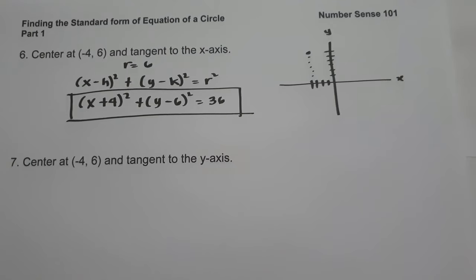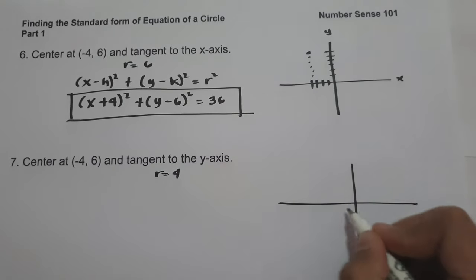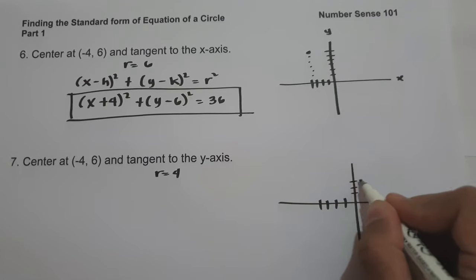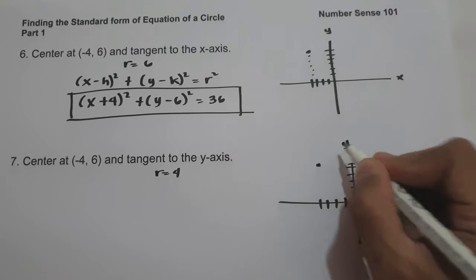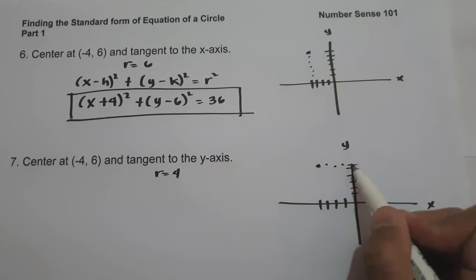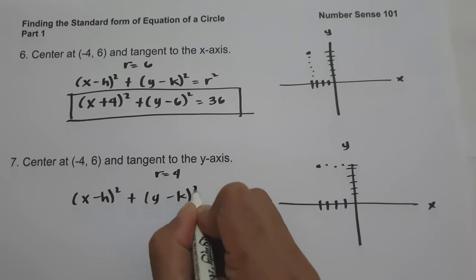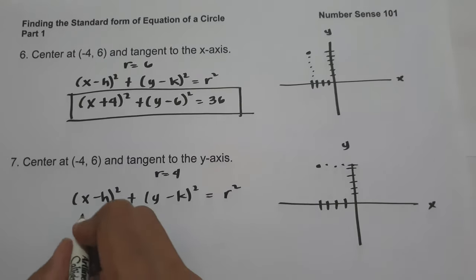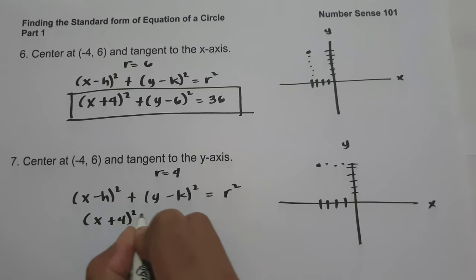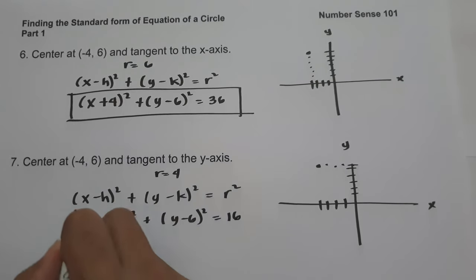On number seven, we have center at (negative 4, 6) and the circle is tangent to the y-axis. Since the center is 4 units away from the y-axis, the radius is 4. Sketching confirms 4 units from the center to the y-axis. The standard form is (x plus 4) squared plus (y minus 6) squared equals 4 squared, which equals 16, and this will be our answer.